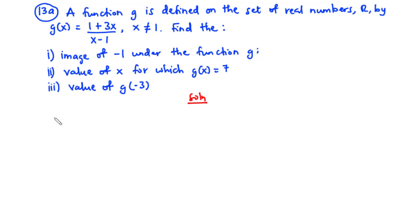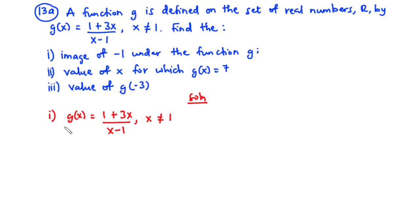Let's solve part i — we are going to find the image of negative 1 under the function g. What this primarily means is that we are going to substitute negative 1 in place of x in this function. We have g(x) equals (1 + 3x) over (x minus 1), where x is not equal to 1. Wherever we see x, we are going to replace that with negative 1.